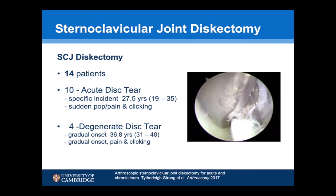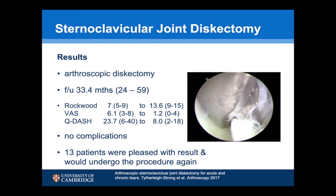We looked at a case series of 14 patients who had disc tears. Ten were acute disc tears — all described a specific instance, their average age was 27.5 years, and most described a sudden pop and pain with associated clicking. Four patients had a more degenerative disc tear with gradual onset, and their average age was 36.8 years. All underwent arthroscopic discectomy. At an average follow-up of 33.4 months, Rockwood scores rose from 7 to 13.6, visual analogue pain scores fell from 6.1 to 1.2, and QuickDASH scores fell from 23.7 to 8. There were no complications, and 13 of the 14 patients were pleased with the results and would undergo the procedure again.